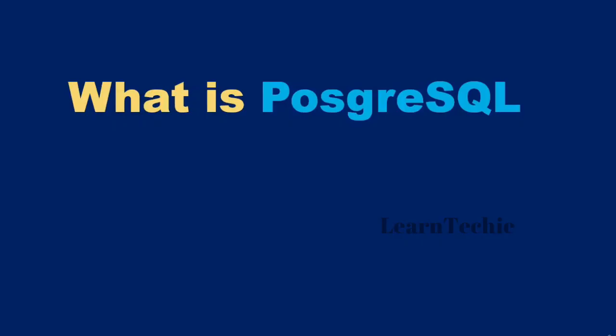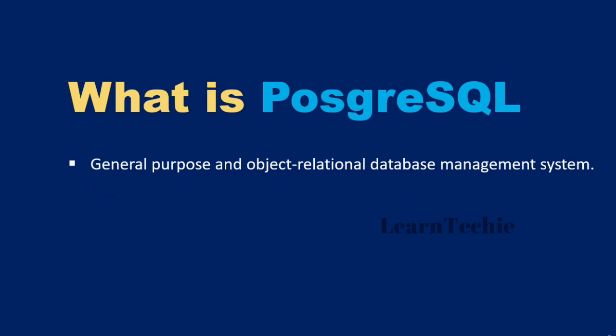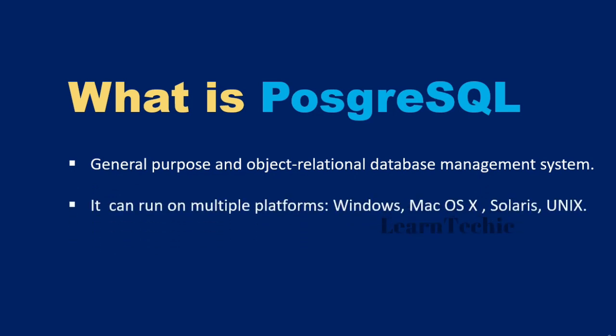Hello there. What is PostgreSQL? PostgreSQL is a general-purpose and object-relational database management system. It is portable, meaning it can run on multiple platforms like Windows, Mac OS X, Solaris, and Unix. It was basically designed to run on Unix-like platforms, but it can also run on other platforms as well.